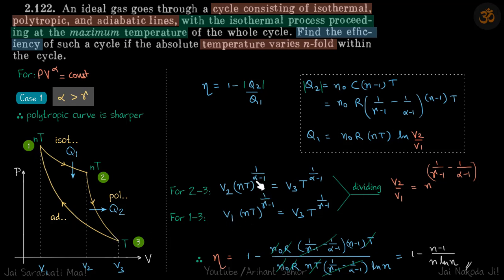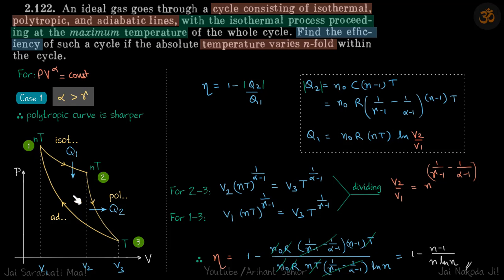For the adiabatic process, the same equation applies except alpha is replaced by gamma. Now we divide these two equations to get the required ratio v2/v1. We substitute this ratio along with the values of q1 and q2 to get our answer. This completes Case 1, where the sharper curve is polytropic and the other is adiabatic.